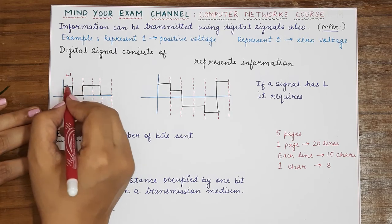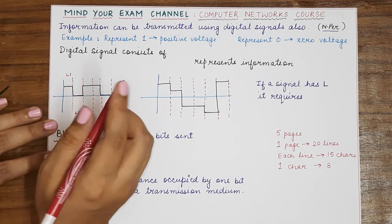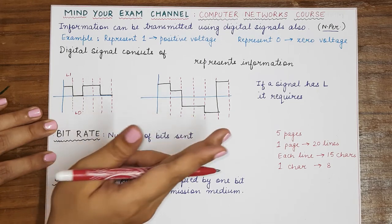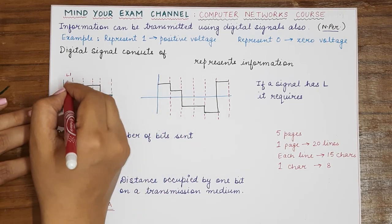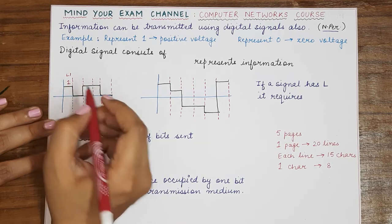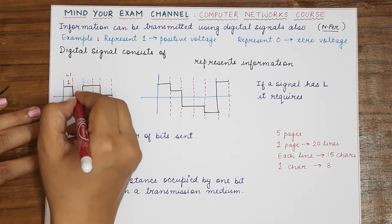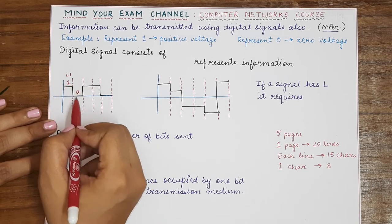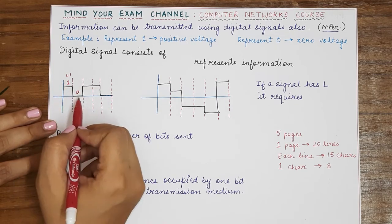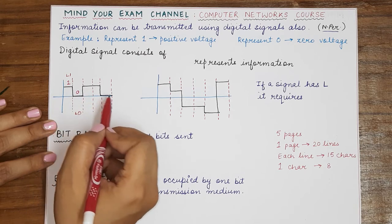So what we can do, since there are two levels we can represent two different kinds of information, that means two bits. So if I am representing level one with one bit and level zero represents zero bit, then using two levels we are representing two different bits in this particular digital signal.